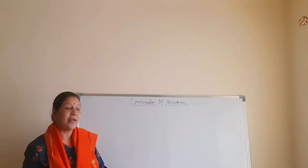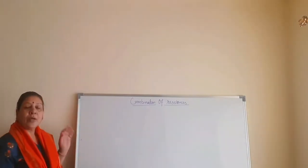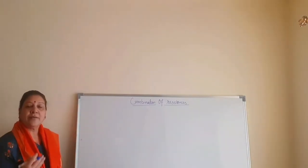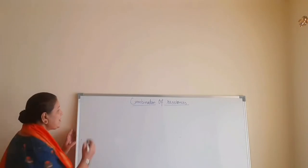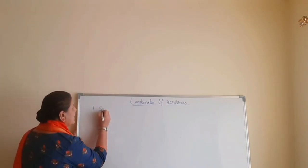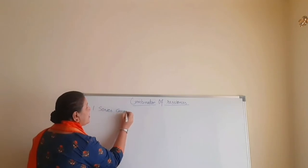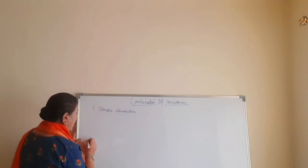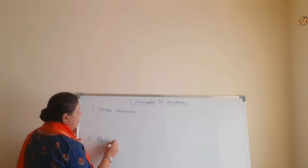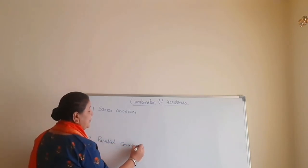So without further delay, let's start the class. Basically, we can connect the resistances in two different ways. One is called series connection or series combination, and the other one is called parallel combination or parallel connection.